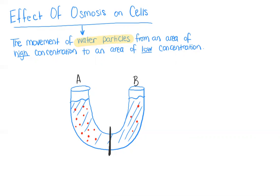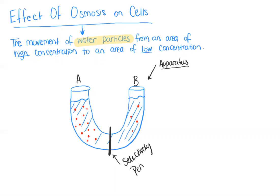Let's take a look at this apparatus below. So here we have an apparatus — or you can think of it as a device — and this apparatus contains a selectively permeable membrane. This selectively permeable membrane only allows water to pass through.